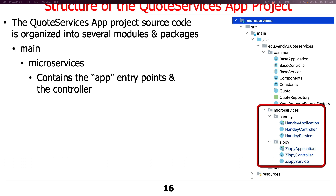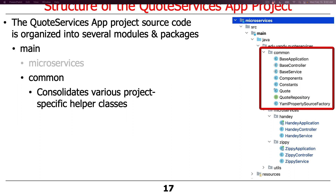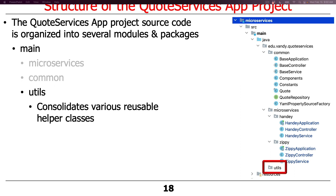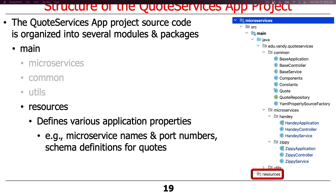The microservices part is where we write our business logic. We have the Handy and Zippy microservices, each with an application, a controller, and a service. The implementations cleverly reuse lots of code from a common set of refactored classes, including a base application, base controller, and base service — so these microservices are just extensions of that generic set. There's also a utils directory containing helper classes, and a resources folder defining application properties like names, port numbers, and schema definitions for the quotes.